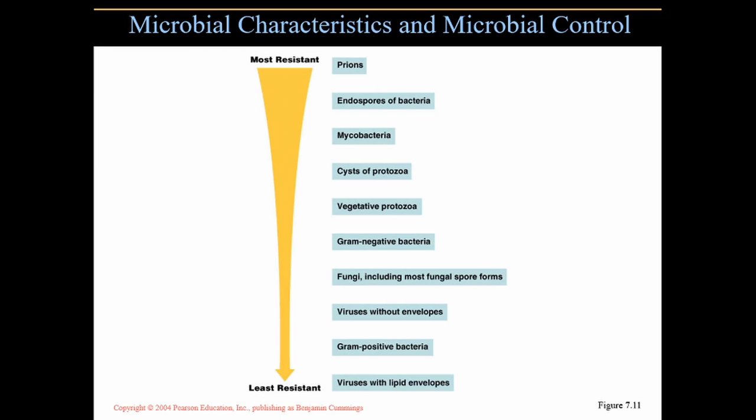SARS-CoV-2, the coronavirus, is a virus with a lipid envelope. That's why so many healthcare professionals and scientists recommend hand-washing for at least 20 seconds — coronavirus has a lipid envelope and soaps can break down plasma membranes, which are made mostly of lipids. So soaps effective against plasma membranes are also effective against viruses with lipid envelopes. Why do viruses have a lipid envelope? It gives them easier entry into host cells, but it comes at a cost — it makes them less resistant to our arsenal of disinfectants.